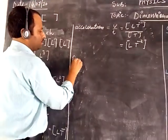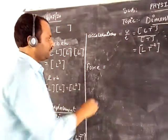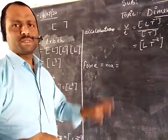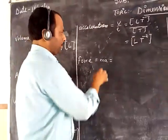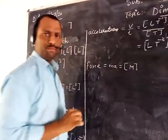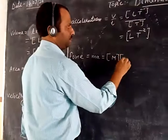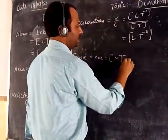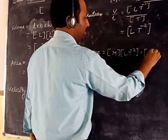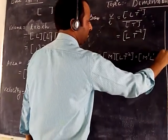Next, force. In class 9, you might have learned about force. Force is defined as mass into acceleration. If you know the formula, dimensions can be found very easily. The dimension for mass is M, and for acceleration it is L T to the power minus 2. So the dimension of force is M¹ L¹ T to the power minus 2.